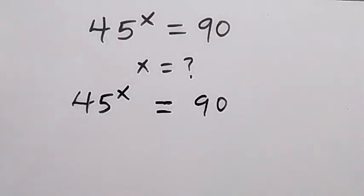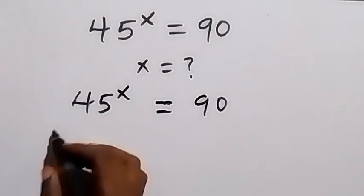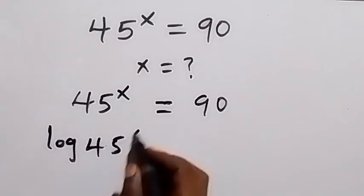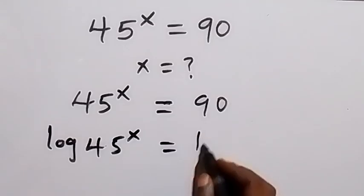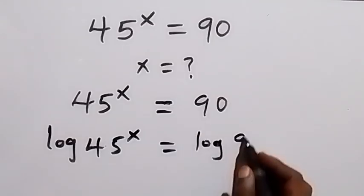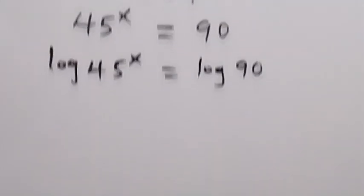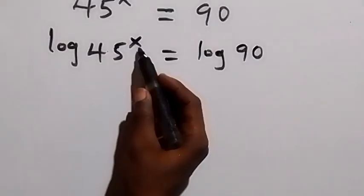Now let's take the log on both sides, so we have log of 45 raised to power x equals log 90. From here we apply the power law of logarithms. This power of x can come to the front.